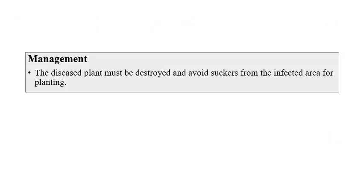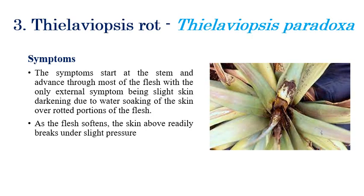For management of leaf and fruit rot, diseased plants must be destroyed. Avoid using suckers from infected plants, especially for new planting areas, as infected planting materials should not be used in new cultivated areas.